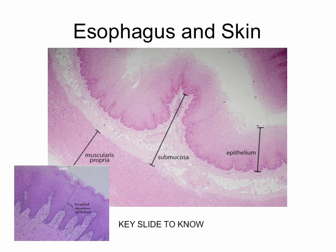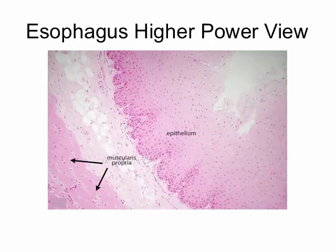In the esophagus, there is no secretion of digestive enzymes and no absorption taking place — it's all about transport. Now to a slightly higher power view of the esophagus, we see the stratified squamous epithelium easily identified. We can note the transition between the mucosa and submucosa, and between the submucosa and the muscular layer.